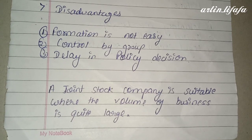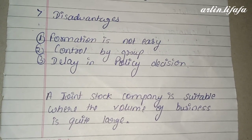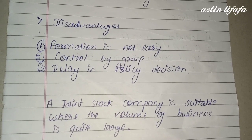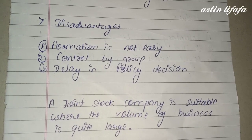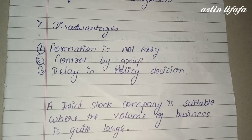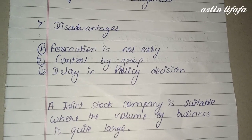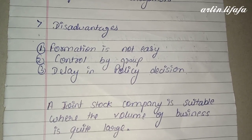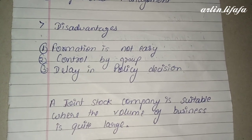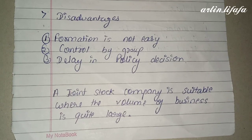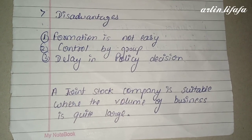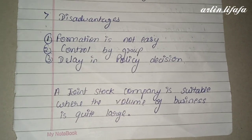Joint stock company के disadvantages: formation is not easy — company का formation करना इतना आसान नहीं है। Control by group — पूरे group के साथ control होता है। Delay in policy decision — बहुत सारे members होते हैं और सब की permission लेना ज़रूरी होता है। Joint stock company is suitable where the volume of business is quite large।